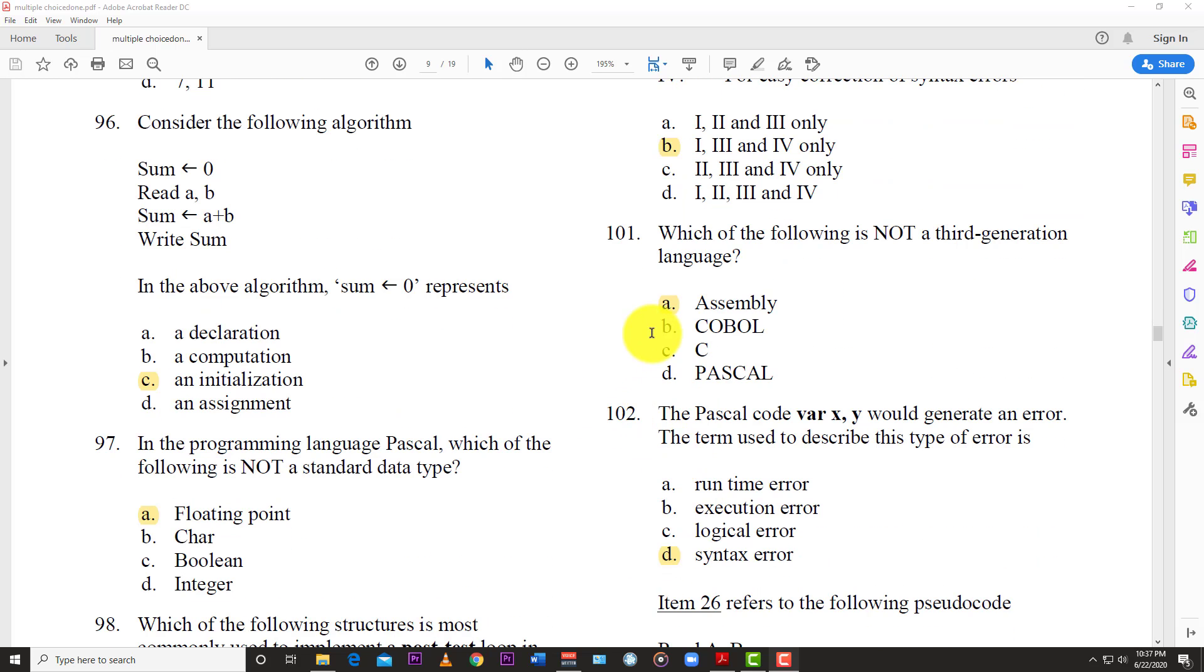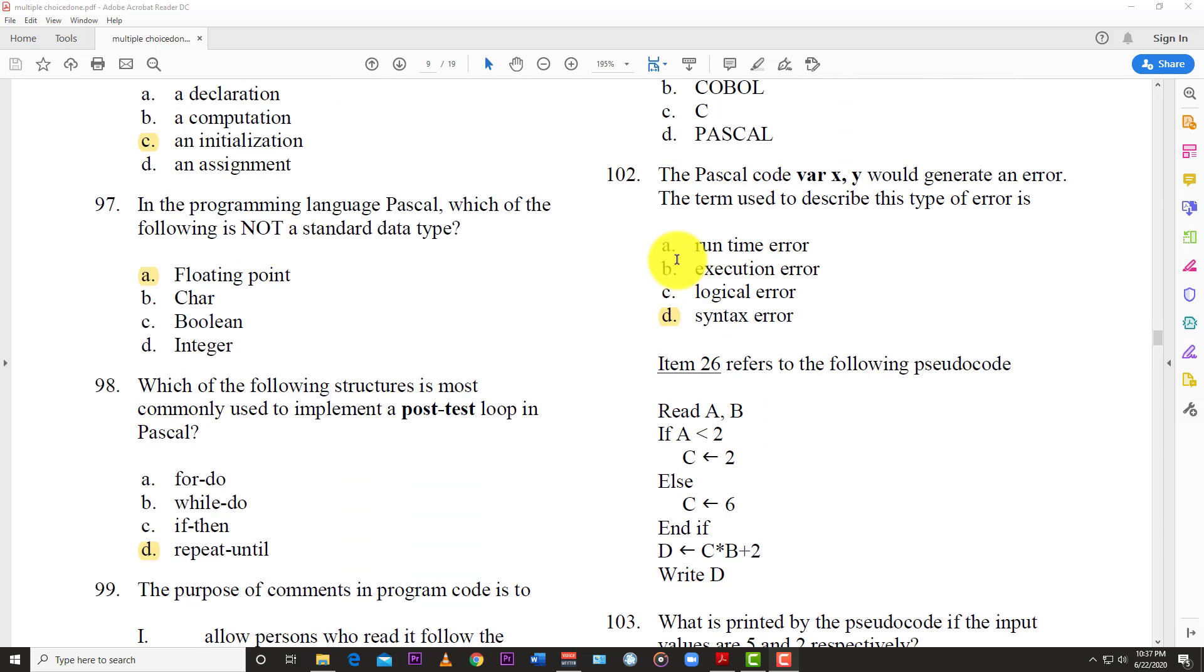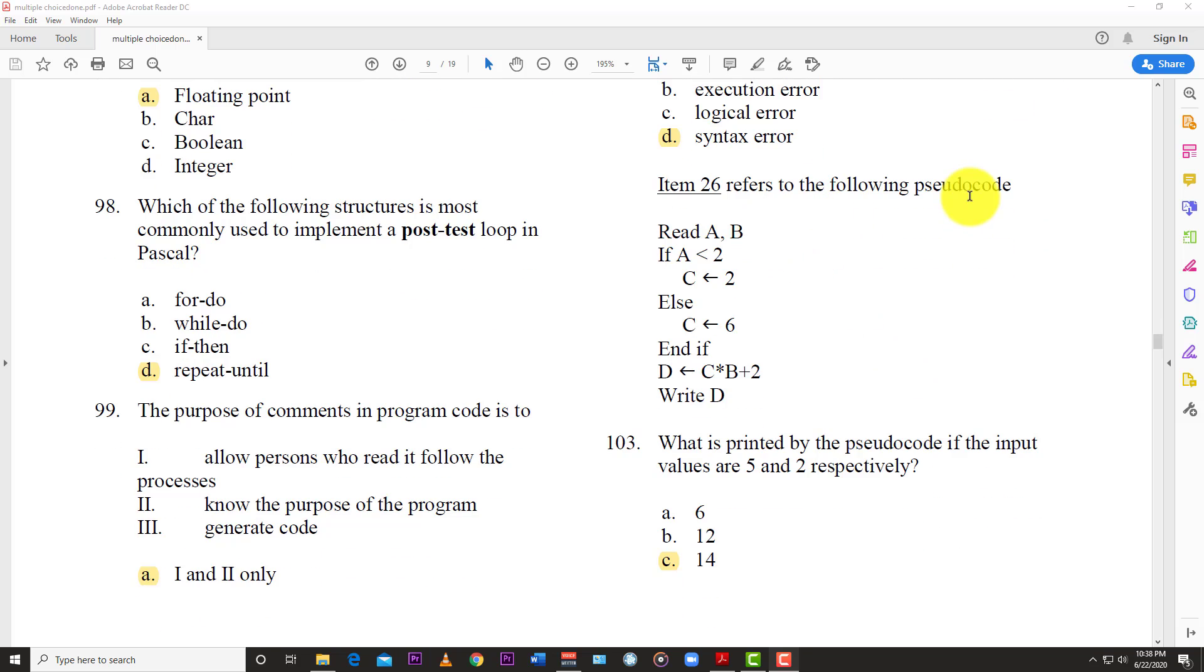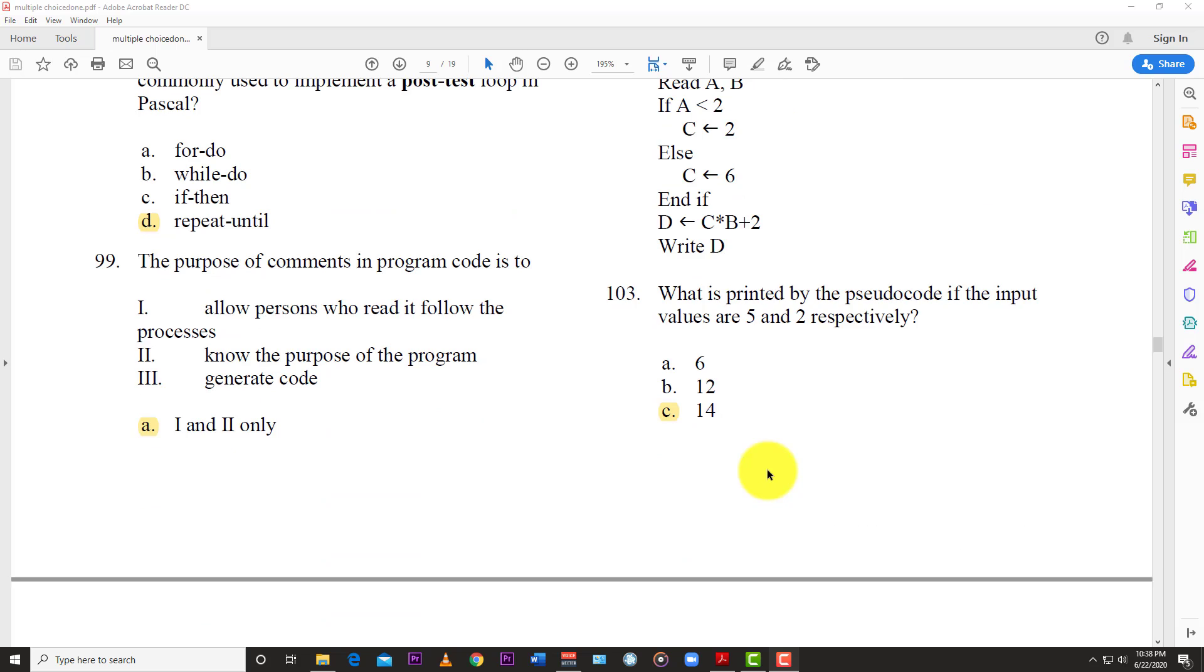Question 101: Which is the following is not a third generation language? And the answer here is A, assembly. Question 102: The Pascal code var x, y could generate an error. The term used to describe this type of error is, and the answer here is D, syntax error. However, the following item refers to the pseudocode written right here. And so the question asks, what is printed by the pseudocode in the input value, if the input values are 5 and 2 respectively? And so the answer here is C, 14.